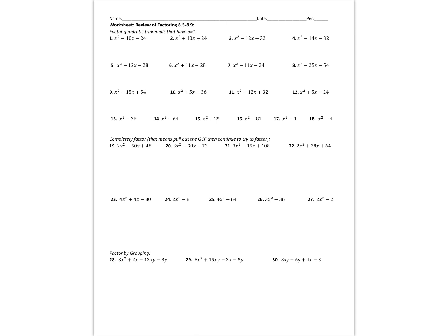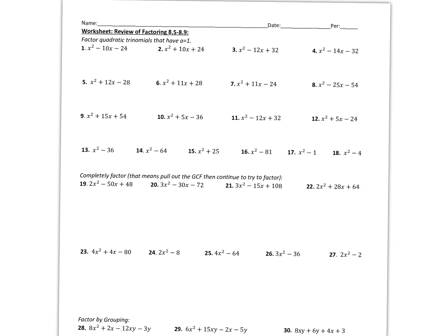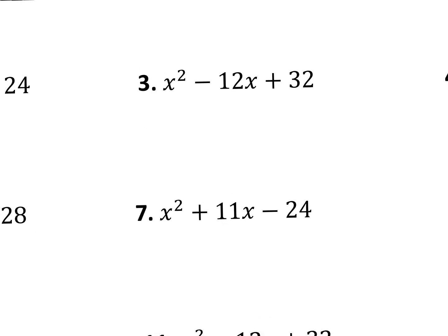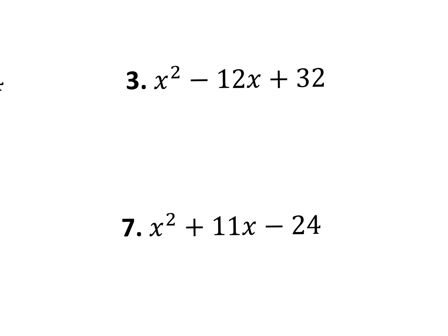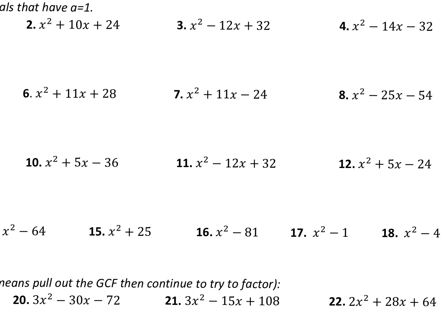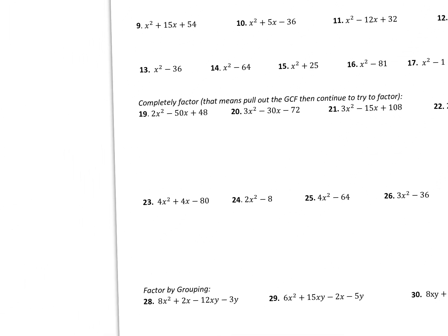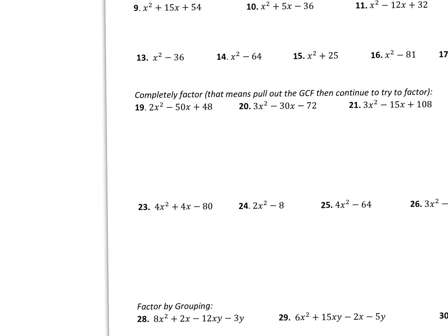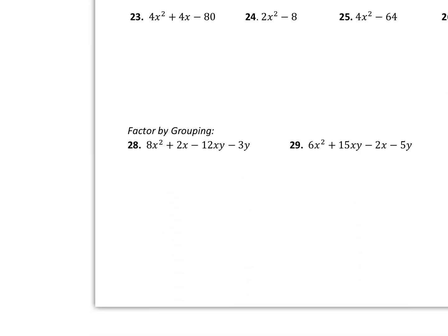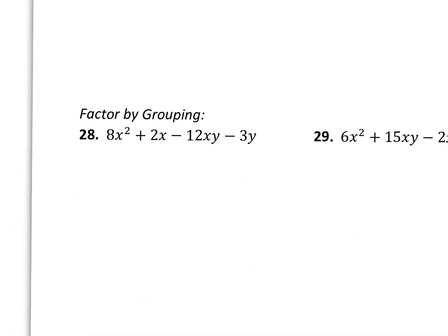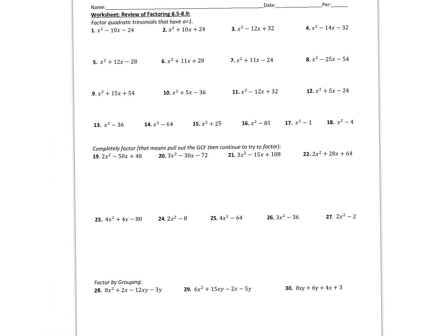So on the previous video, we ended up working on the front side of this worksheet where we had the A value of 1. You simply thought, what times what is your C value that if you add together gives your B value? I always say make a list of the multiples of the C value, and then you could add them and see which one gives you B. We also did a little bit of pulling out the GCF first and then continue factoring, as well as factoring by grouping. Hopefully you guys took the time to practice the rest of these questions on the front side.